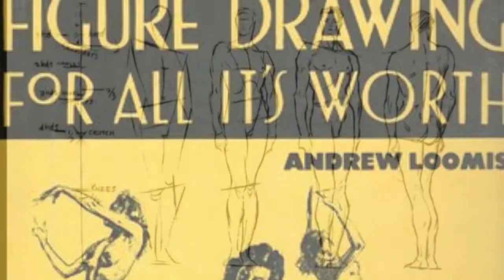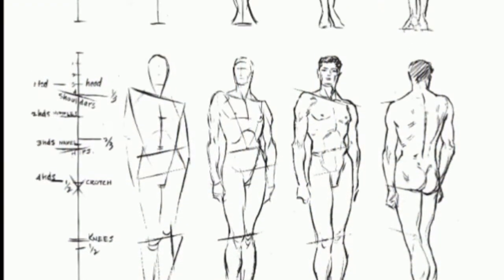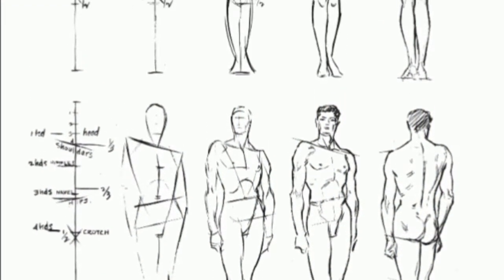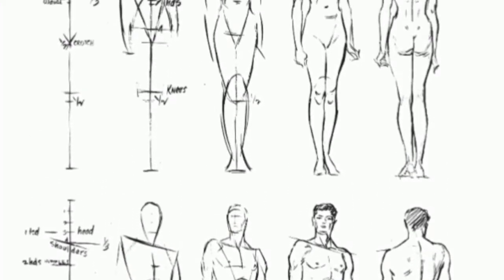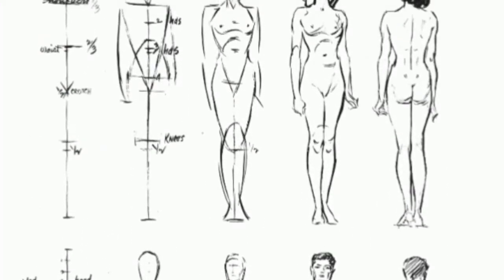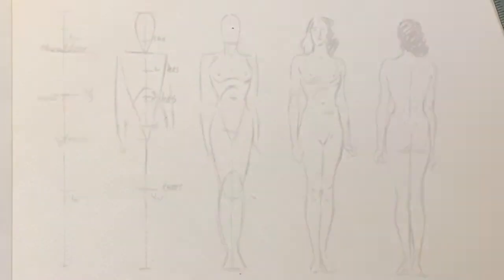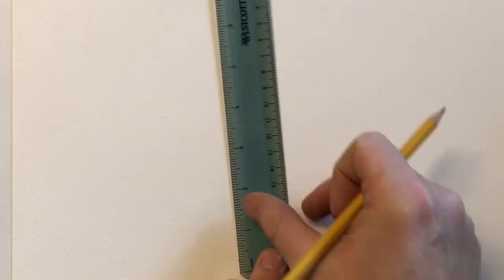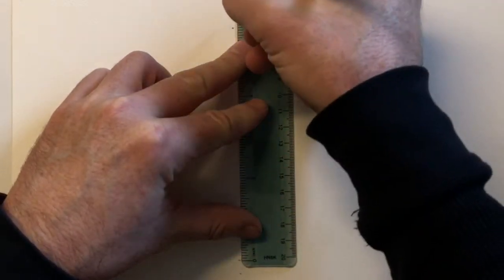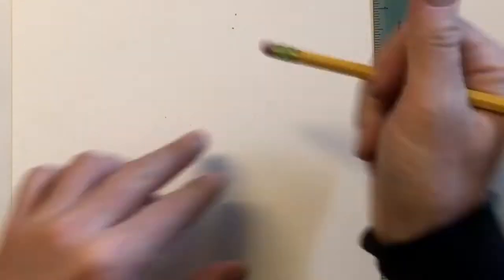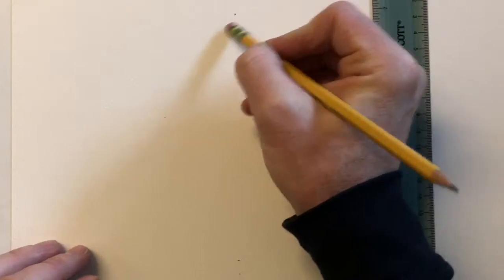What we're going to be working from today is a great book called Figure Drawing For All It's Worth by Andrew Loomis, a classic drawing book. In this book, he has a great series of studies of proportion of both the male and the female human figure. So for today, we're going to be focusing on the male figure.